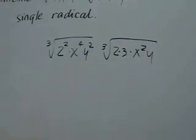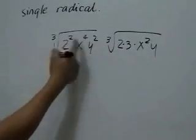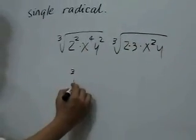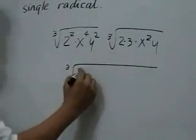Next, we multiply using the law of radicals, which says that the cube root of this number times the cube root of another number is the cube root of their product. So we have 2 squared times 2, that's 2 cubed,